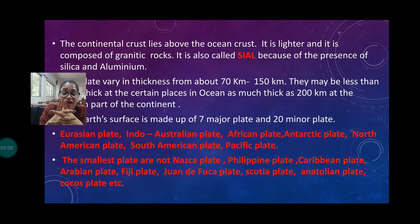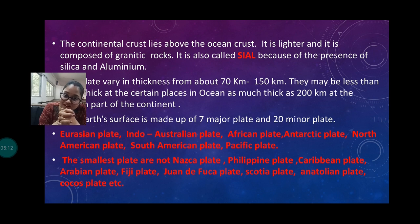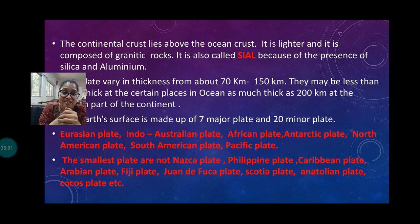The continental crust is lighter and is made up of granite rock, but the oceanic crust is heavier and is made up of basaltic rock. The thickness of the continental crust is 70 to 150 kilometers, whereas the oceanic crust can be as thick as 200 kilometers at the part of the continent.